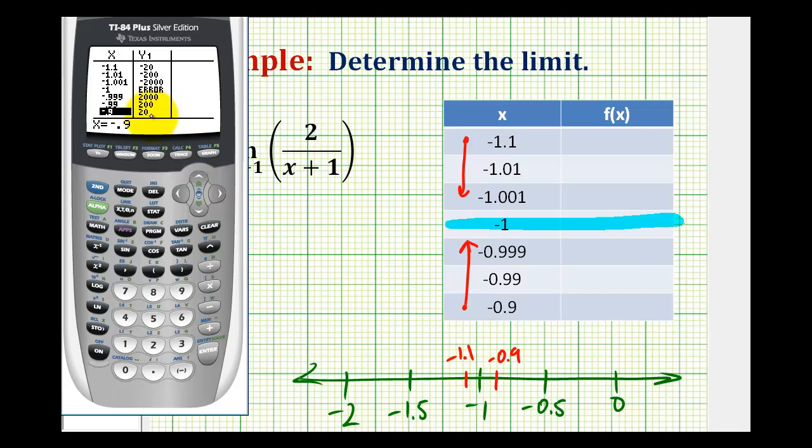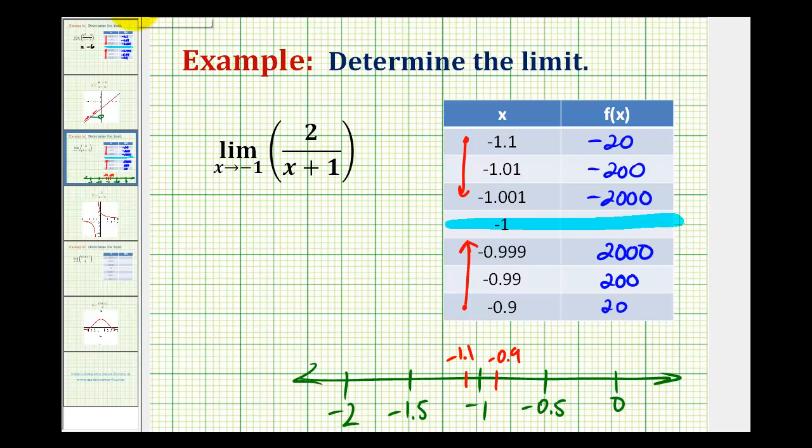So now we'll record these values in the table, and then analyze the results. Notice as we approach negative 1 from the left side, these function values are increasing without bound, which means the limit as x approaches negative 1 to the left would be equal to negative infinity.